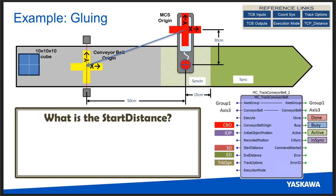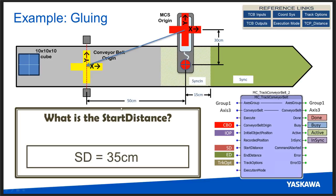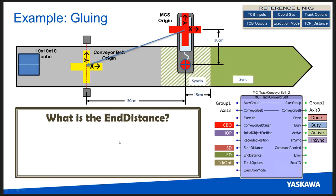For the start distance: since we're starting in the center of the sink-in zone with 15 centimeters on each side, we calculate 50 centimeters minus 15 centimeters to get a start distance of 35 centimeters. The end distance is 300 millimeters, which is as far as the ball screw can move.